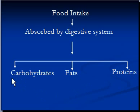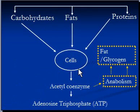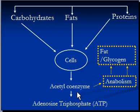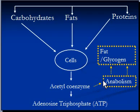These three food components are taken to individual cells by blood, where they are all converted into a common molecule known as acetyl coenzyme. It is at this stage that if cells have excess food, they start the process of anabolism and create fat and glycogen, both of which can be stored and reused whenever necessary. Otherwise, the acetyl coenzyme is converted into adenosine triphosphate.